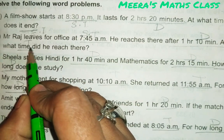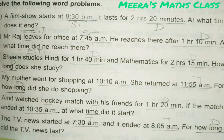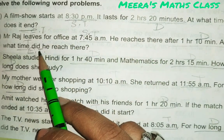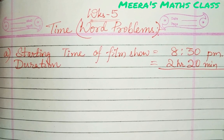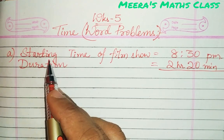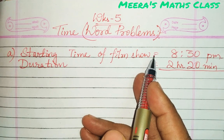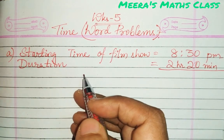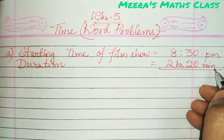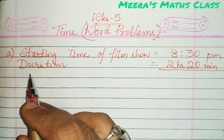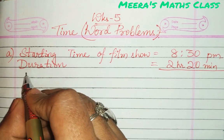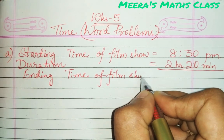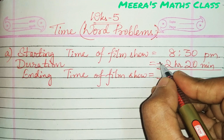He reaches there after 1 hour 10 minutes — that is duration. At what time did he reach? That means end time is asked. So now let's do these two questions where starting time is given, duration is given, and end time is asked. Here you see how to write it: starting time of film show is equal to 8:30 p.m., and duration is equal to 2 hours and 20 minutes.